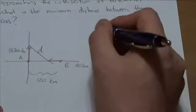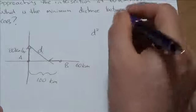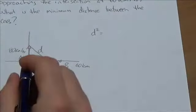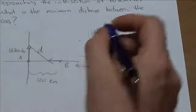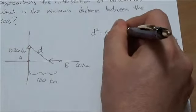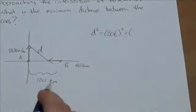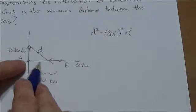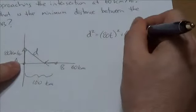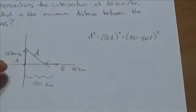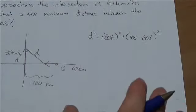So d² is going to be the distance that A travels in any given time, which is going to be (80t)², plus the distance that B is from that intersection, which will be (100 - 60t)². Now I could expand that out when I take the derivative, because now I've got everything in terms of one variable, T.